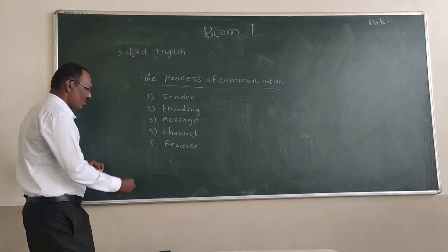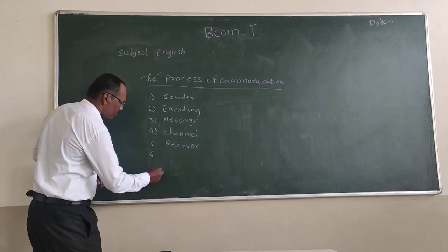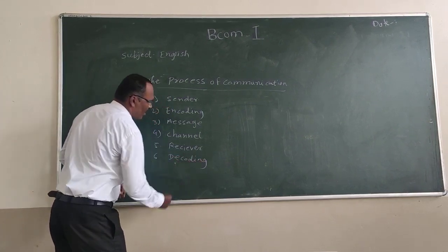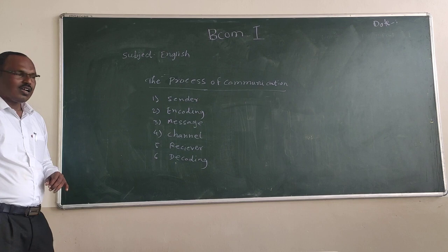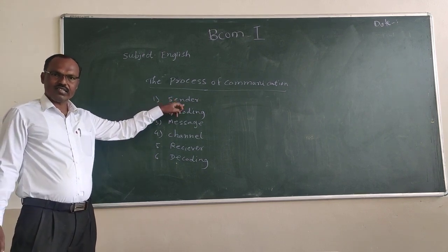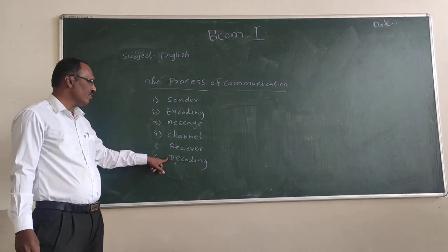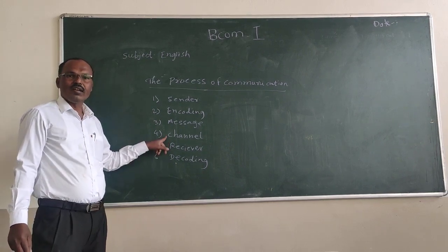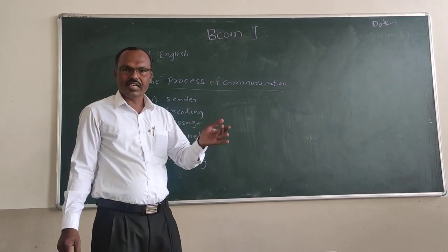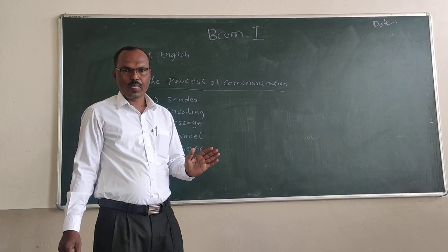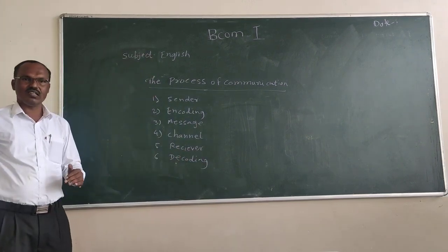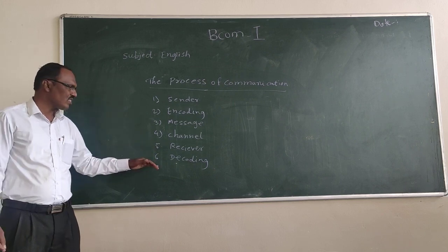The sixth aspect is decoding. What is decoding? As the process of encoding takes place in the mind of the sender, in the same way the process of decoding takes place in the mind of the receiver. Here the receiver has to interpret the message given by the sender. When the receiver interprets the message, she can understand the meaning of the message.